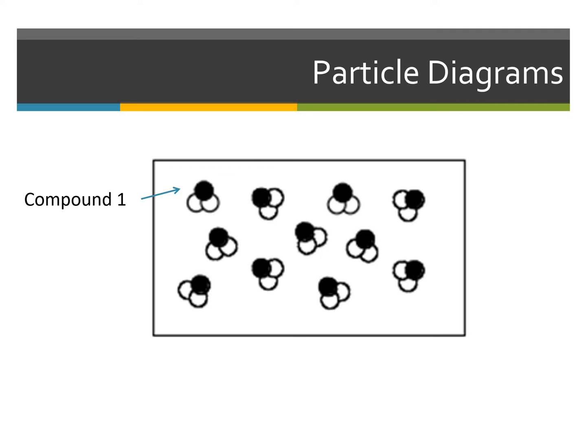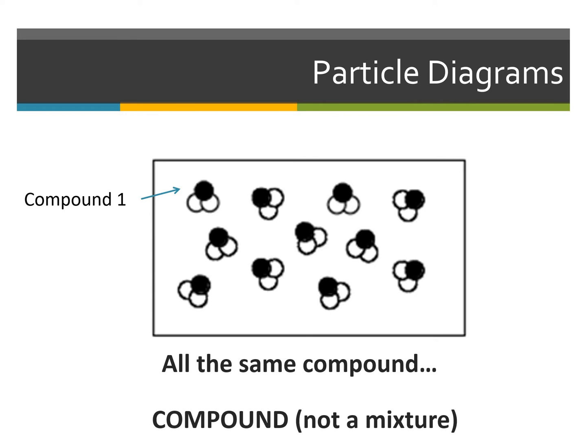For this next particle diagram, we see that there are particles that are touching each other, which means they have formed a compound. Each particle type is considered one element. We have a singular black element chemically combined — since they are touching — with two white elements. So this is considered a compound. Since every particle in here is the same compound, this would be classified as a compound, not a mixture. A mixture means we have multiple different things in one place.